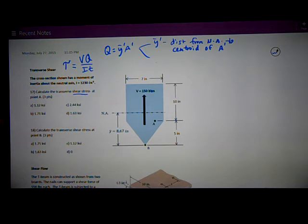A prime in that formula for Q is, there's different ways of saying it, but I try to say it as concisely as I can, as the area away from the neutral axis at the point where I'm calculating tau.